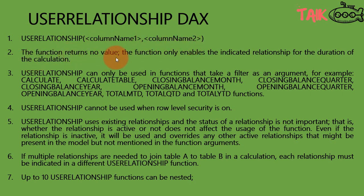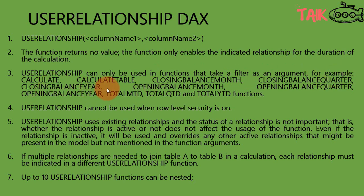The function returns no value. The function only enables the indicated relationship for the duration of the calculation. USERELATIONSHIP can only be used in functions that take a filter as an argument, for example CALCULATE, CALCULATETABLE, CLOSINGBALANCEMONTH, CLOSINGBALANCEQUARTER, CLOSINGBALANCEYEAR, OPENINGBALANCEMONTH, and like all such DAX functions.